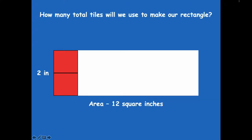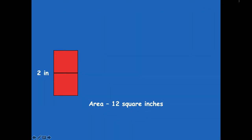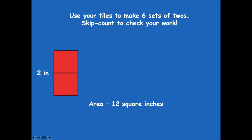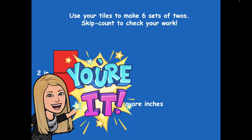Now we know that our area is 12 square inches, so how many total tiles will we need to make our rectangle? We'll need 12 tiles because the area is 12 square inches. How many twos are in 12? We count by twos to get to 12 — that's six. So six twos: two, four, six, eight, ten, twelve. Use your tiles to make six sets of two, then skip count to check your work.